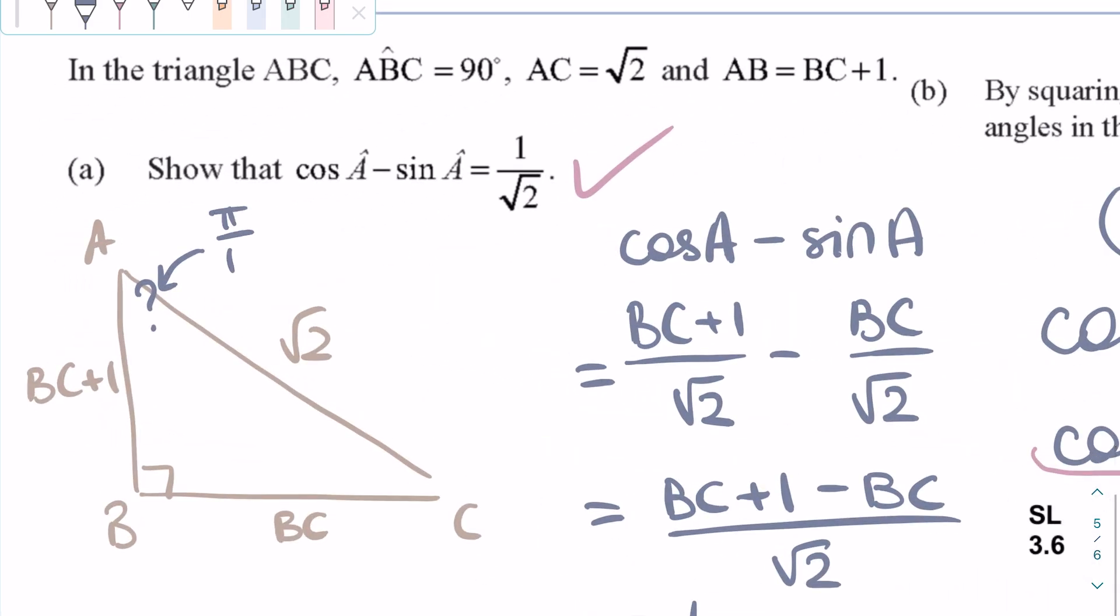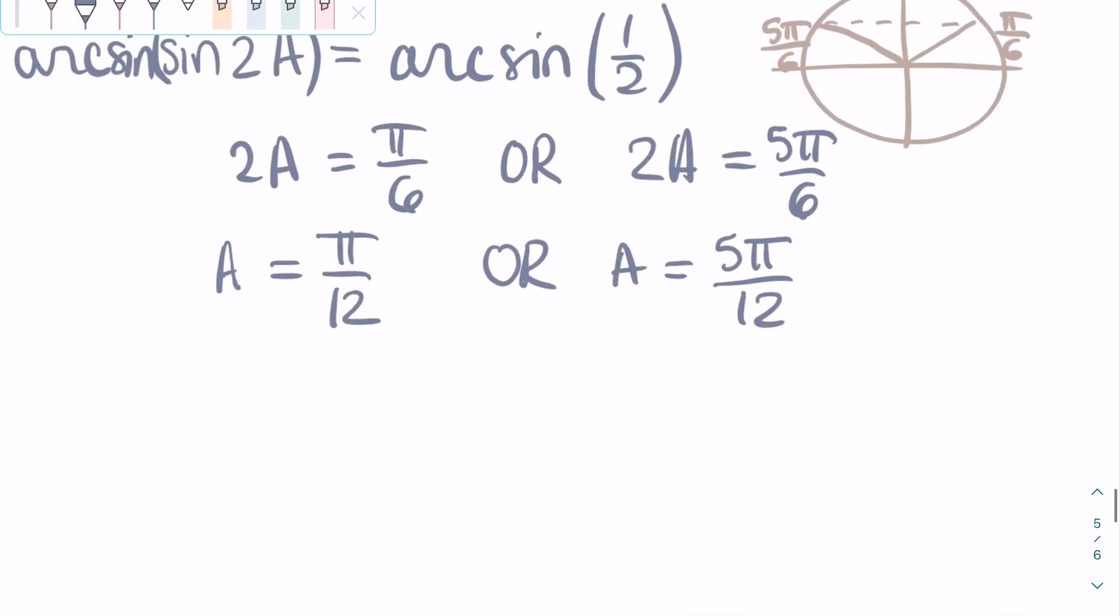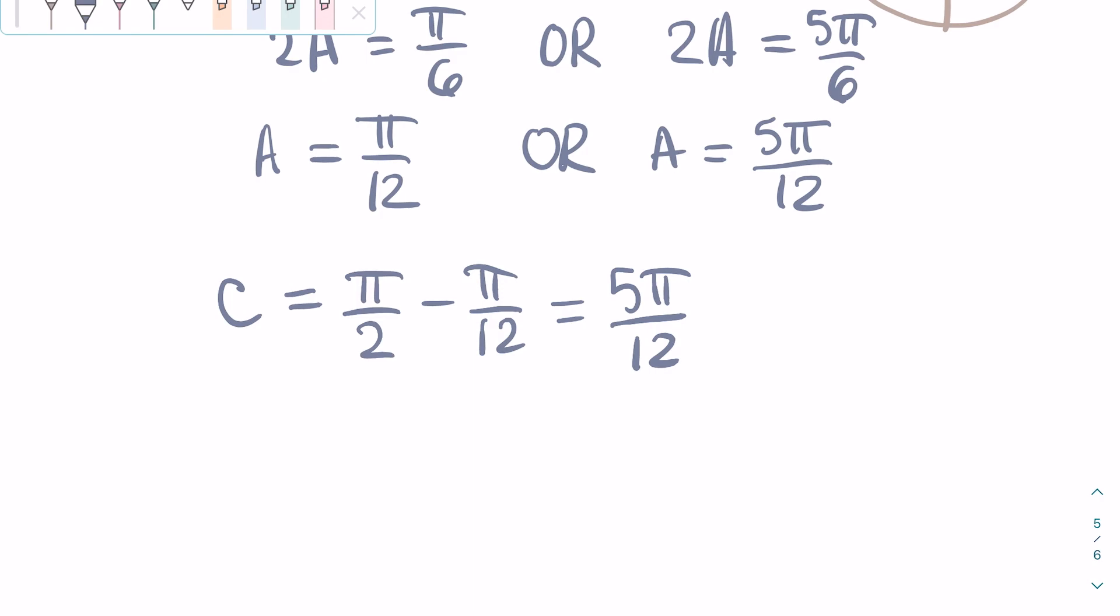Now, let's go back to our original triangle for this question, and make A equal to Pi over 12. It actually does not matter if you make it 5 Pi over 12 or Pi over 12, since we just need to find the angles in the triangle.